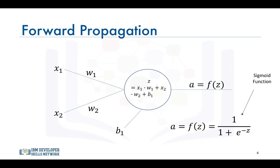Activation functions are an extremely important feature of artificial neural networks. They basically decide whether a neuron should be activated or not — in other words, whether the information the neuron is receiving is relevant or should be ignored. The key takeaway is that a neural network without an activation function is essentially just a linear regression model. The activation function performs nonlinear transformation to the input, enabling the neural network to learn and perform more complex tasks such as image classification and language translation.